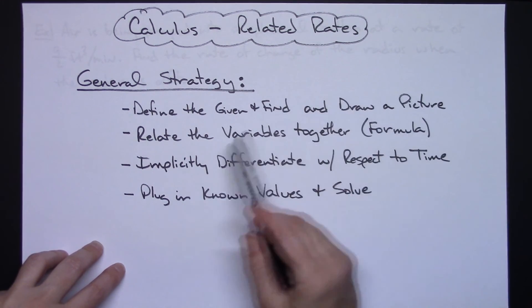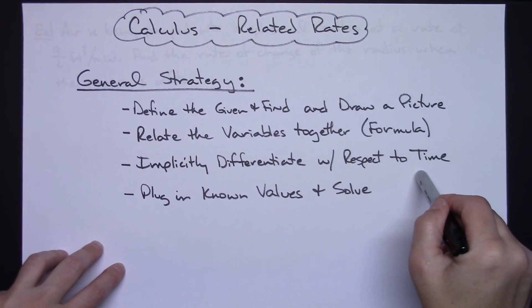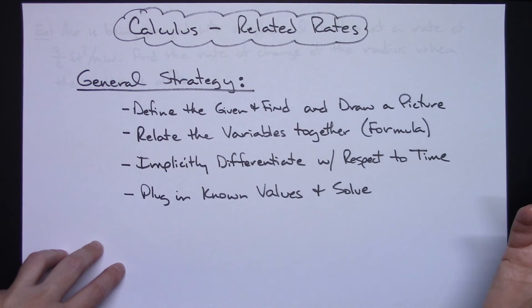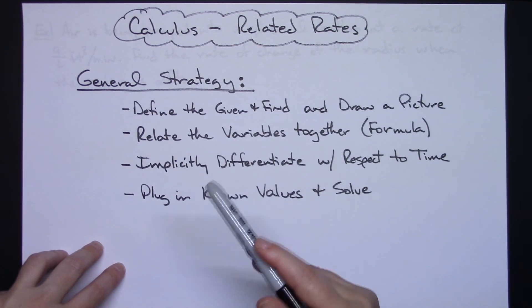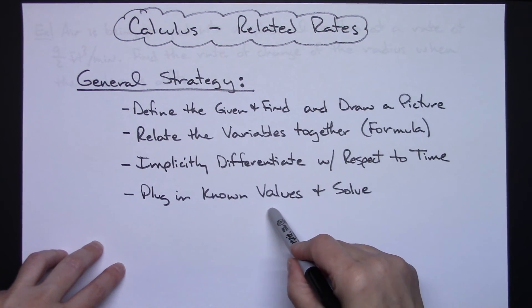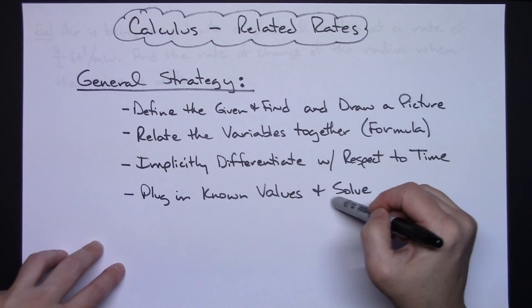Because then that formula is the one that you are going to have to differentiate. You're going to implicitly differentiate with respect to time because these rates are changing with respect to time. After you do that and you've simplified the equation, then you're going to plug in your known values, whatever they gave you, anything that you know, and then solve for your one unknown value, which is whatever you are trying to find.